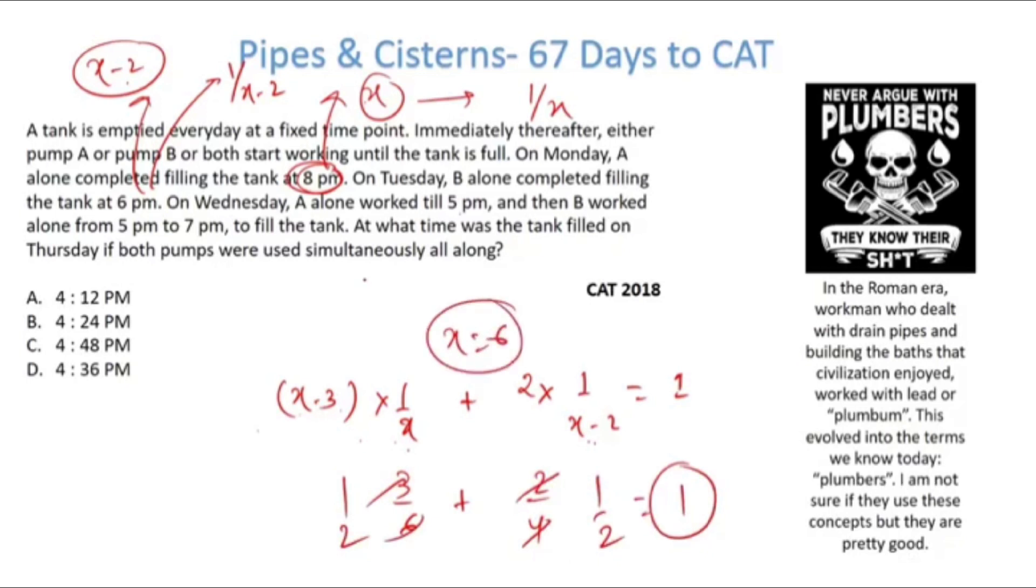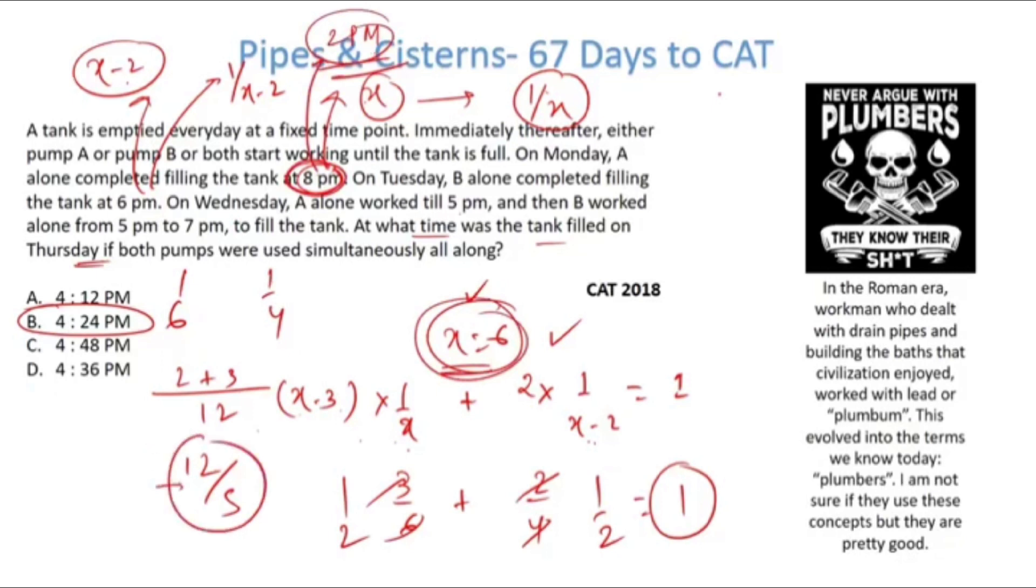Now if both the pipes were used simultaneously, the first pipe will do 1/6 work in an hour, the second pipe will do 1/4 of the work in an hour. The LCM is 12. So 2 times and 3 times, it becomes 12/5. So this becomes 424. Why 424? Because at x equals 6, this thing 8pm, so the work must have started at 2pm. And what's the amount of time taken? 12/5, so 2 hours and 24 minutes. Therefore we mark the answer option B.